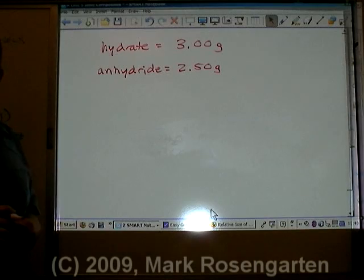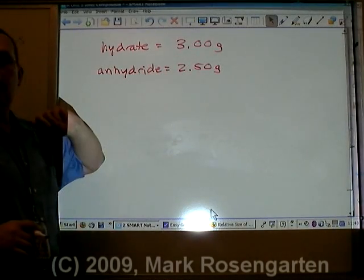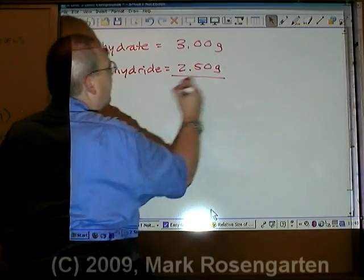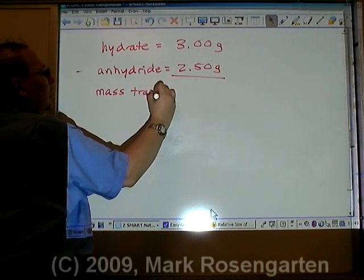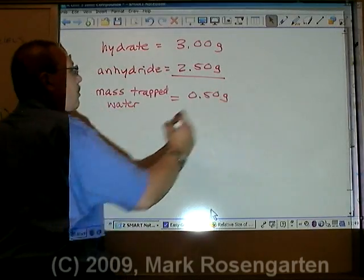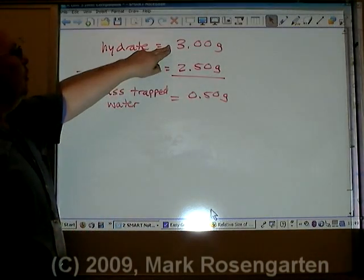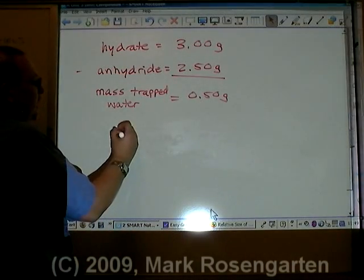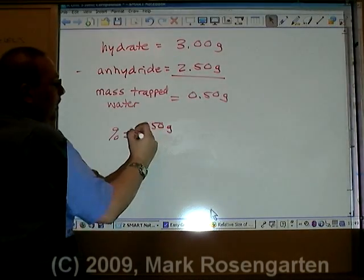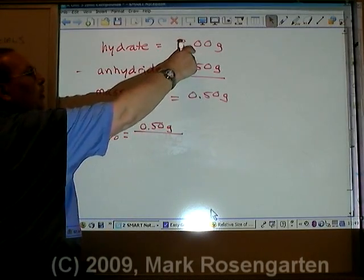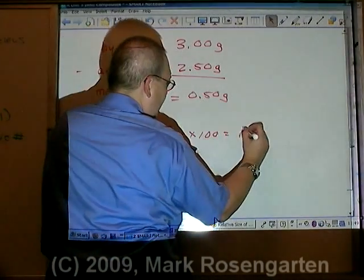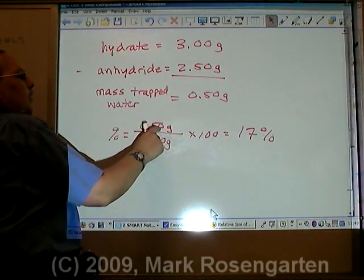We want to find the percent of water? Easy. First, figure out how much water you drove off. If it weighed 3 grams with the water and 2.5 grams without the water, then simply subtract to get the mass of the water that was trapped — and that equals 0.50 grams. That's the mass of water driven off when the hydrate was heated and turned into an anhydride. To get the percent, we take the mass of the water, 0.50, divided by the whole, 3.00 grams, and multiply by 100. That gives us 17% — two sig figs.